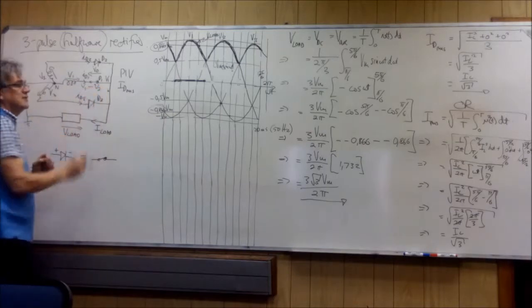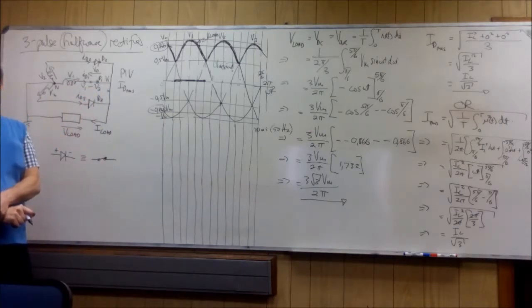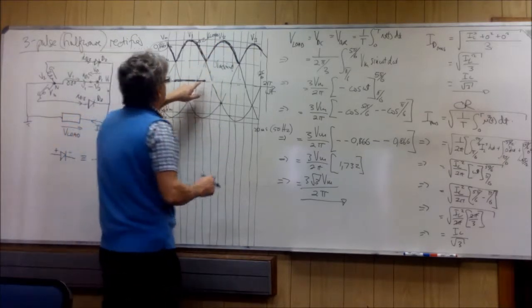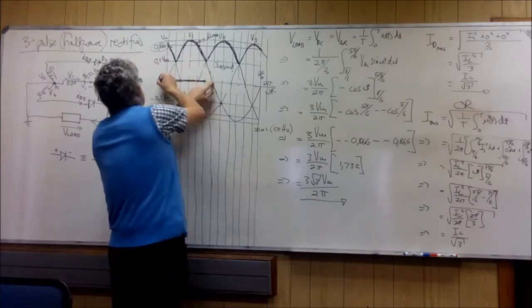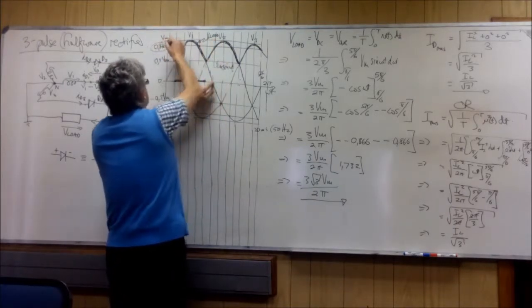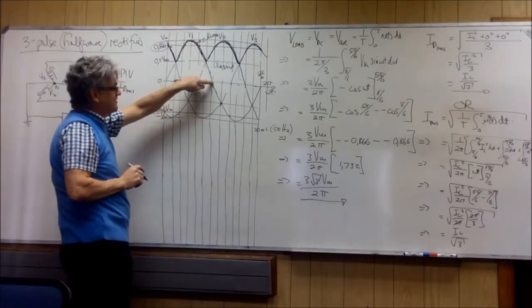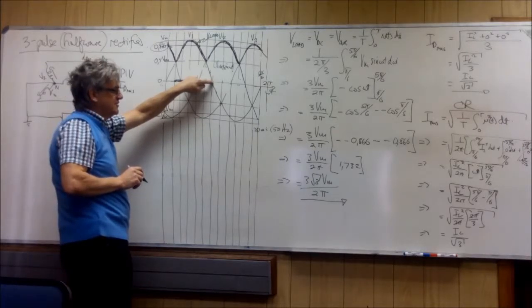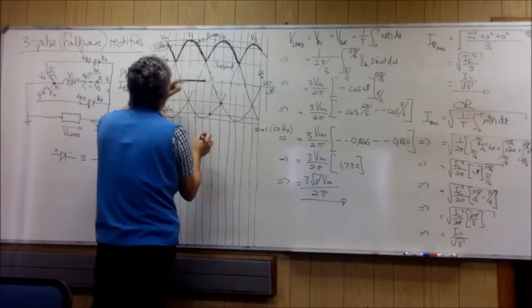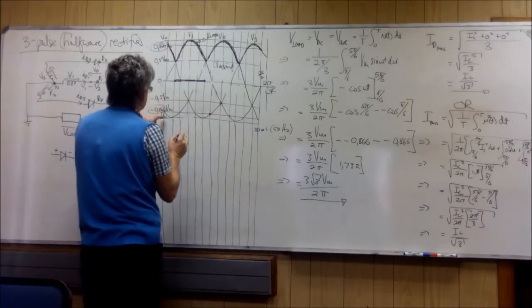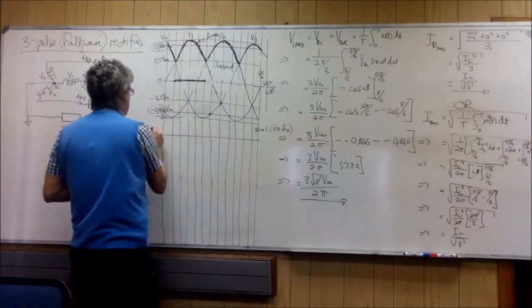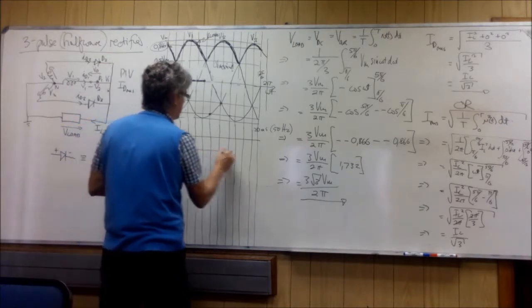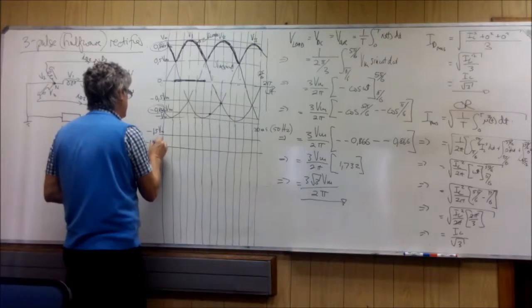Now we have V1 minus V2, because now V2 is on the load. So we have V1 is zero, V2 is 0.66, so what is the answer? 0 minus 0.66, it's just minus 0.66, minus 1.5 Vmax, minus 1.732 Vmax.